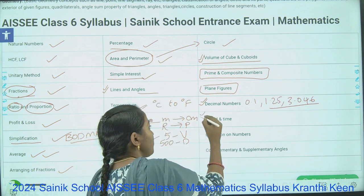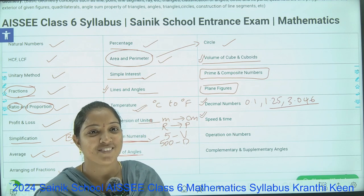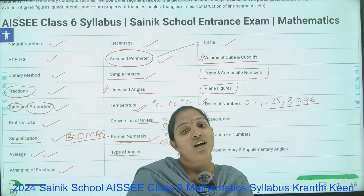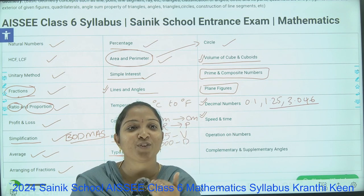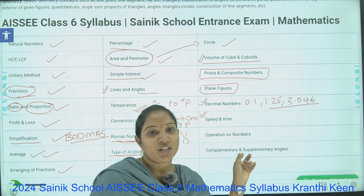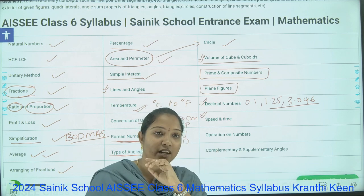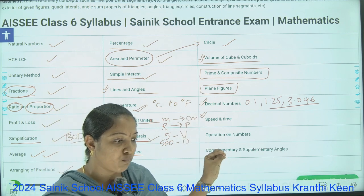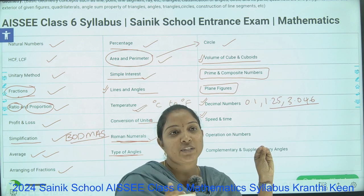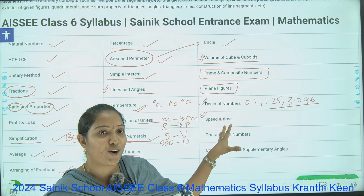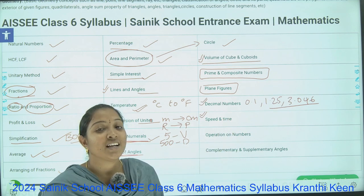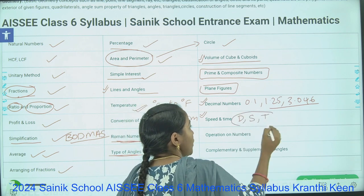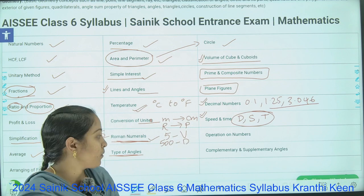Next is Speed and Time — a very important topic for competitive exam students. Writing faster is not enough; writing the right answer is also important. We need to do math with both speed and accuracy. If you take too much time on a single question, two and a half hours will not be sufficient. So speed and time is most important for competitive exams like Sainik. We will discuss distance, speed, and time in this topic.